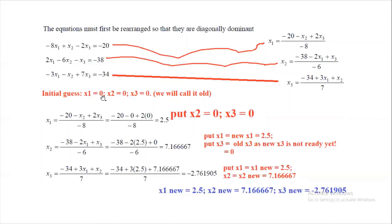The beauty of Gauss-Seidel is that it updates after every sub-iteration. For x2, we use the new x1 = 2.5 (not the old x1 = 0) and the previous x3 = 0, substituting −2 × 2.5 + 0 to get the new x2. Then for x3, both the new x1 = 2.5 and new x2 = 7.16667 are used, giving the new x3. The first iteration is complete.